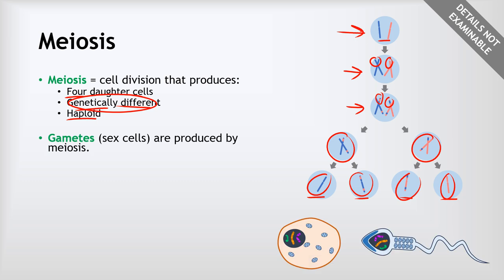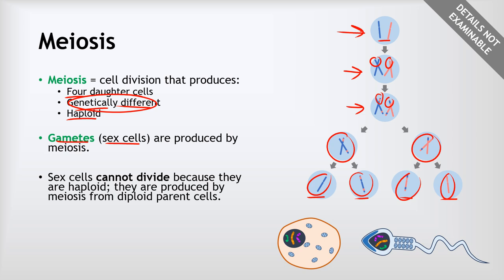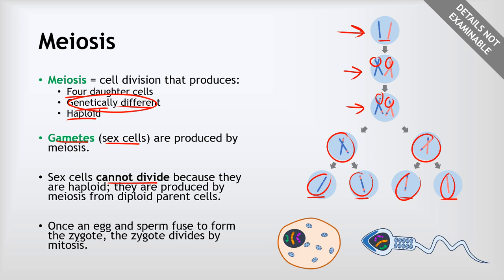The only cells produced by meiosis are gametes — the sex cells: egg cells and sperm cells. Sex cells cannot themselves divide because they're haploid and don't have enough chromosomes. Once an egg and sperm fuse to form the zygote, the zygote is diploid and will start dividing by mitosis. So meiosis is specifically used to turn one diploid cell into four gametes.